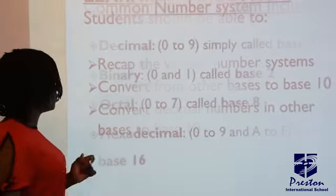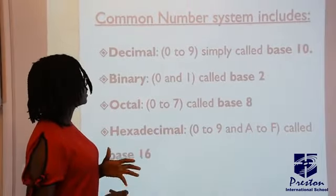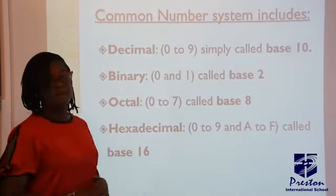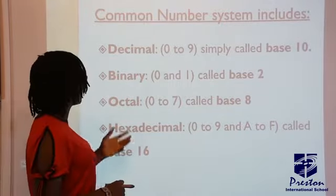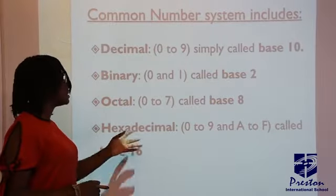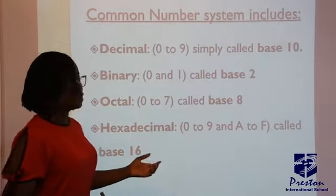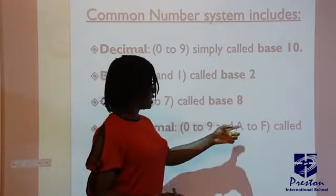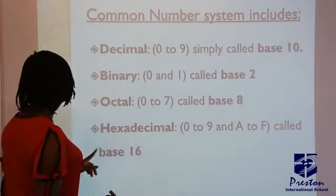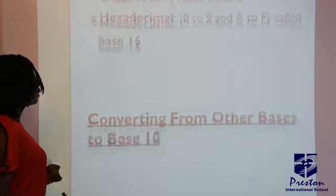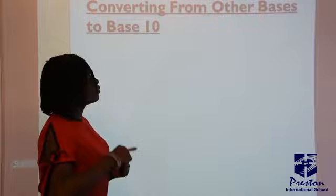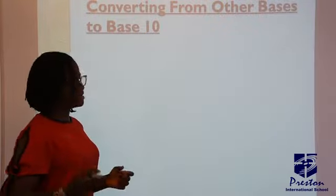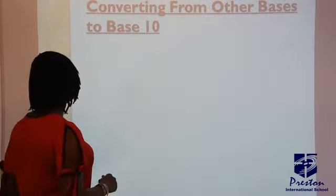But let's quickly look at the previous area we talked about - the common number systems that we have. We have decimal, binary, octal, and hexadecimal. Don't forget the rule in hexadecimal, which consists of zero to nine and A to F, and it's called base 16. Now today we're converting from other bases, any base, to base 10.